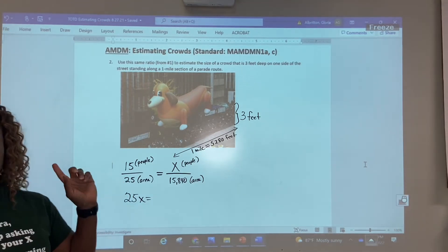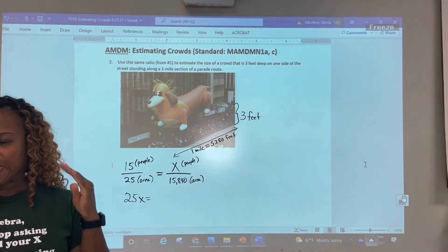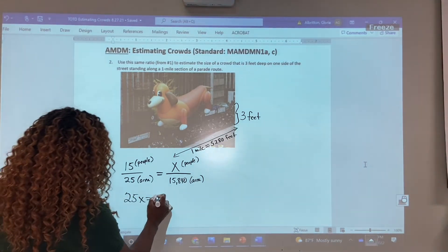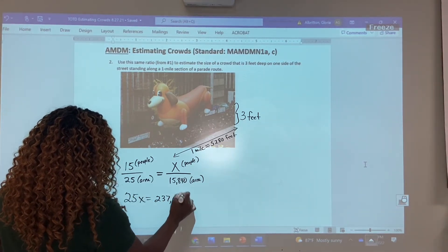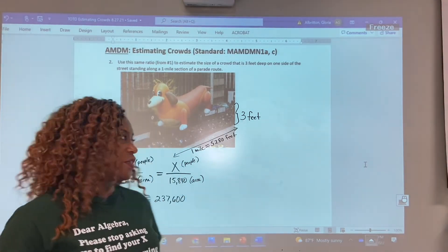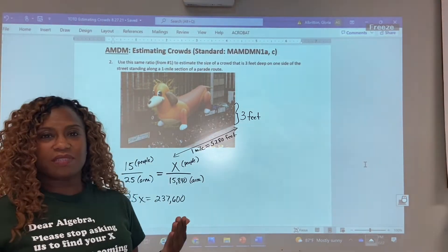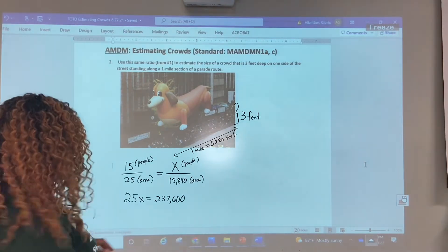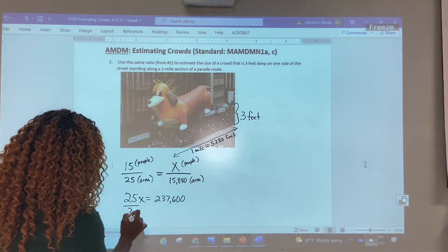Now the 15 times 15,840, that is 237,600. Yeah, I'm not a genius, I just calculated it earlier. Okay. Now, how do we solve this? This is just a one step equation. We will divide both sides by 25.